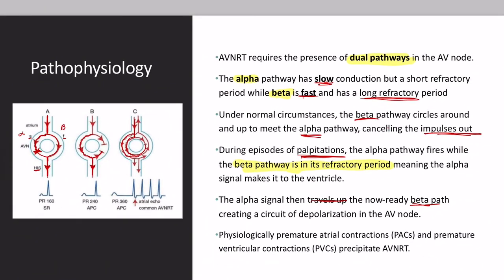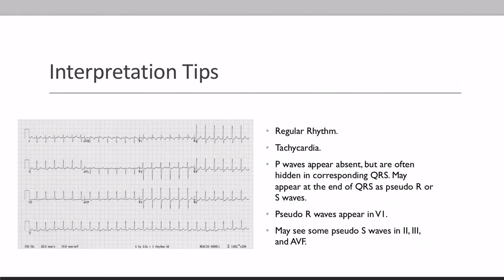There are a few things that can trigger the onset of AVNRT — premature atrial contractions as well as premature ventricular contractions can precipitate this. For ECG interpretation tips: you'll often see a regular rhythm with a tachycardic pulse — our patient was at 144 beats per minute. P waves appear absent but are often just hidden within the QRS complex, since the atria beat during the ventricular beat. They can also appear at the end of the QRS as a pseudo R wave in V1 or pseudo S waves in leads II, III, and aVF.